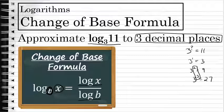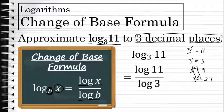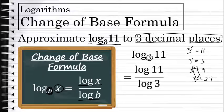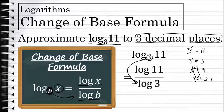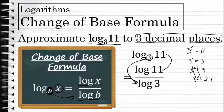Let's apply this change of base formula to solve the log base 3 of 11 to three decimal places. Well, to apply the formula, our base in this problem is 3, and we'll take the log of that base in the denominator of a fraction. And we're taking the log base 3 of 11, we'll take the log of 11 in the numerator. The log of 11 divided by the log of 3 to three decimal places is 2.183.